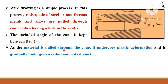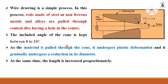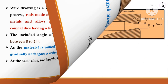As the material is pulled through this cone or die, it undergoes plastic deformation — that is, permanent deformation — converting the raw material into the desired shape and cross-sectional area. It gradually undergoes a reduction in diameter, so here the diameter is reduced while the length is increased proportionally during the wire drawing process.